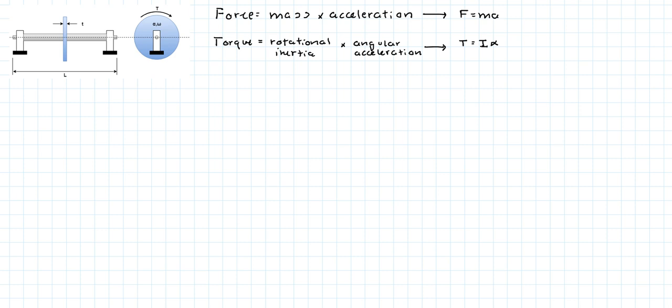Okay, so for a hollow disc, the moment of inertia is I equals one-half times the mass times the outer diameter squared minus the inner diameter squared. Well, what's the mass?